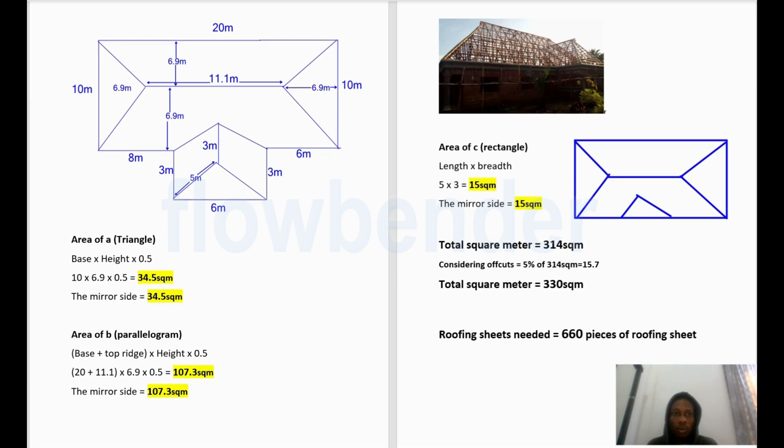So the next thing we want to check now is the area of the parallelogram, which is this side. Area of parallelogram is this long side plus this short length. When you have it, you multiply it by the height, as the distance between the long and the short, then multiply by 0.5. Practically, we are saying the base plus the top breadth times height times 0.5. That's 20 plus 11.1 in bracket, then you multiply it by 6.9, multiplied by 0.5, you have 107.3 square meters. So square meter or meter square is the unit of area. And like I mentioned, because it's the mirror side of this, so whatever you have here is what you have here.